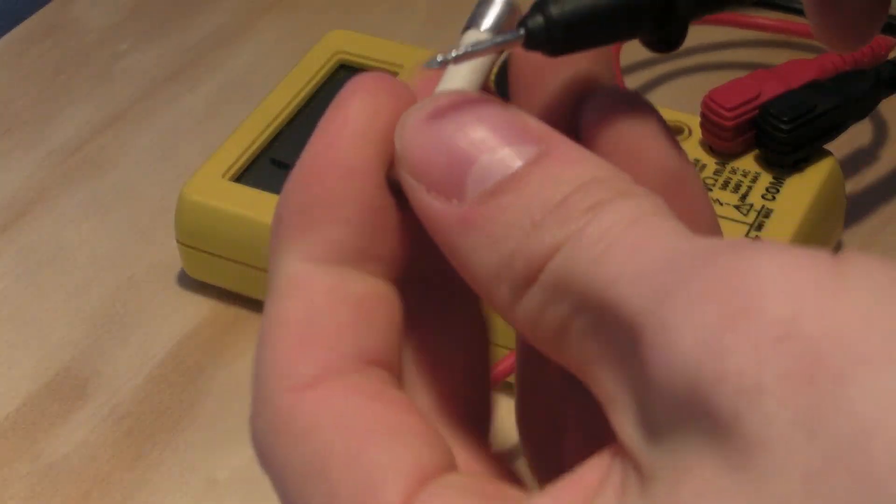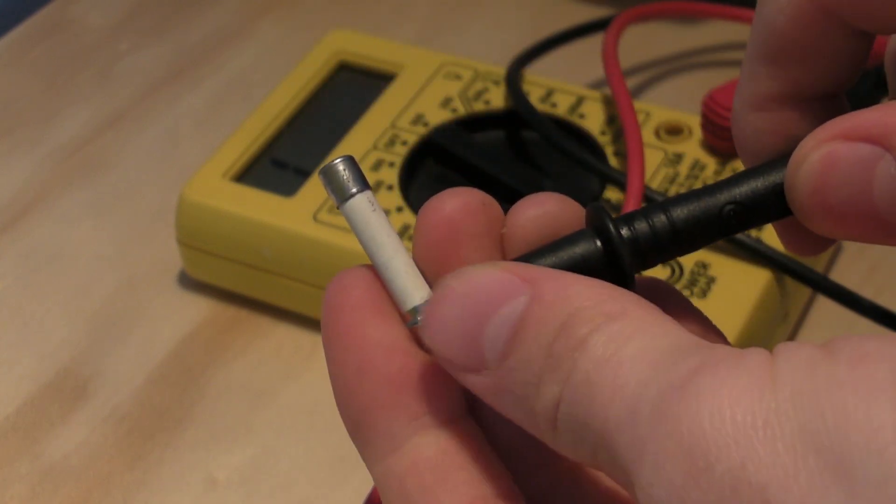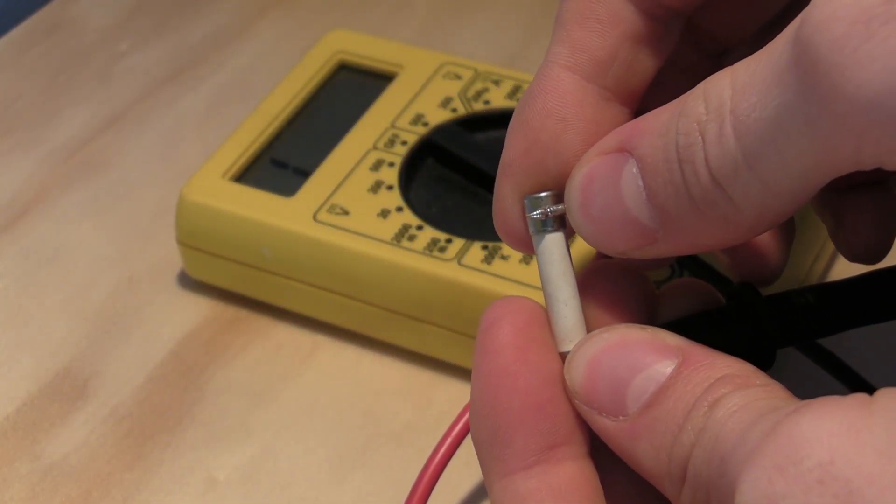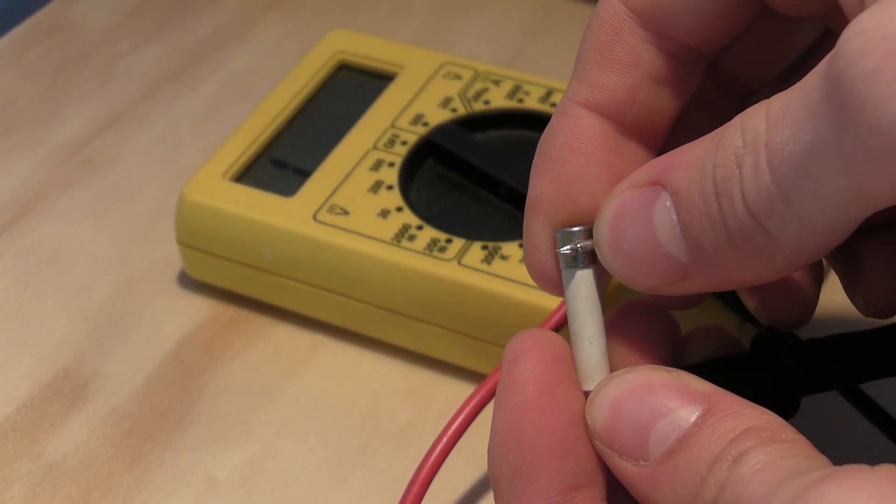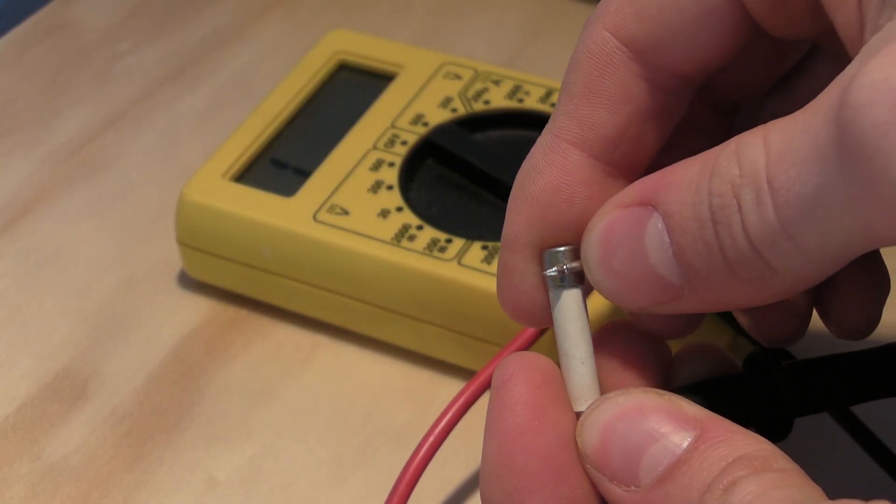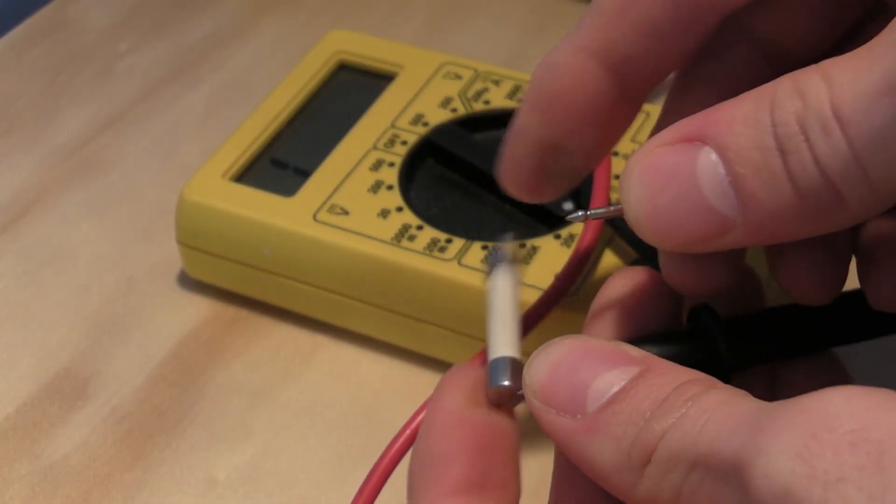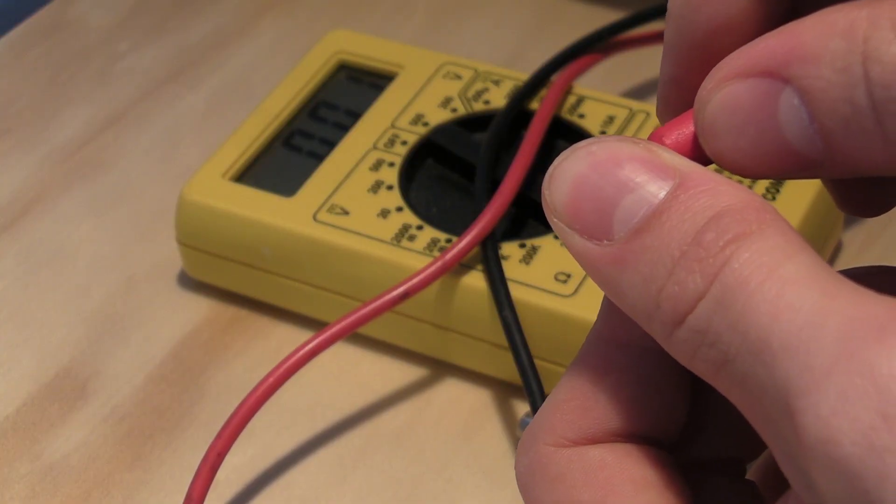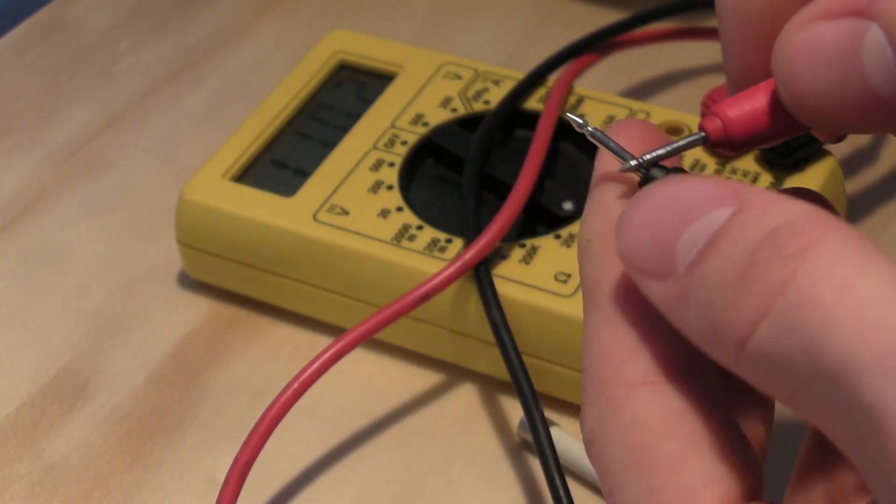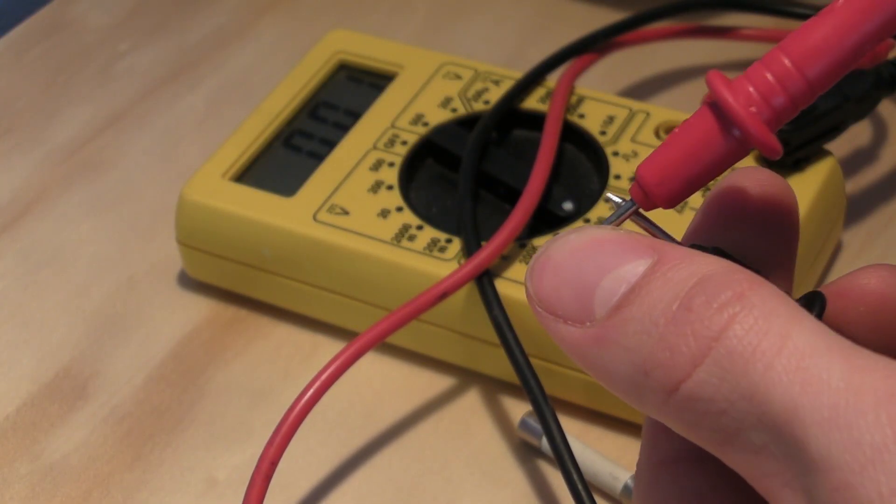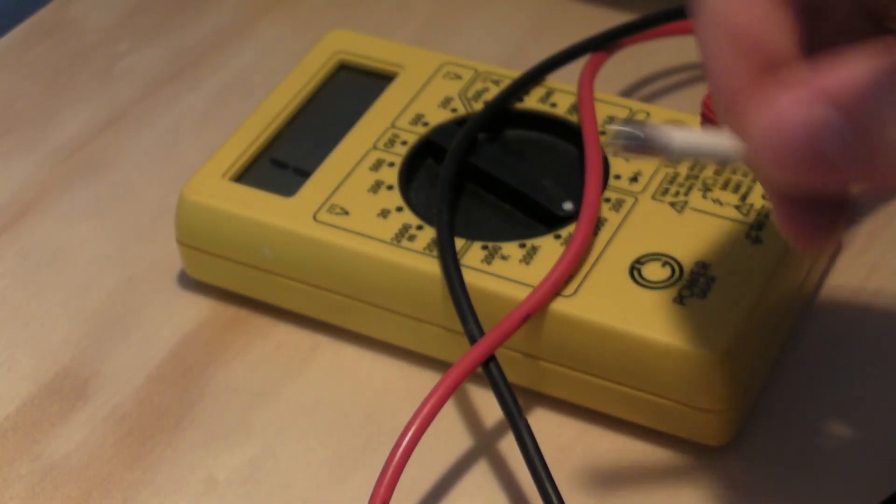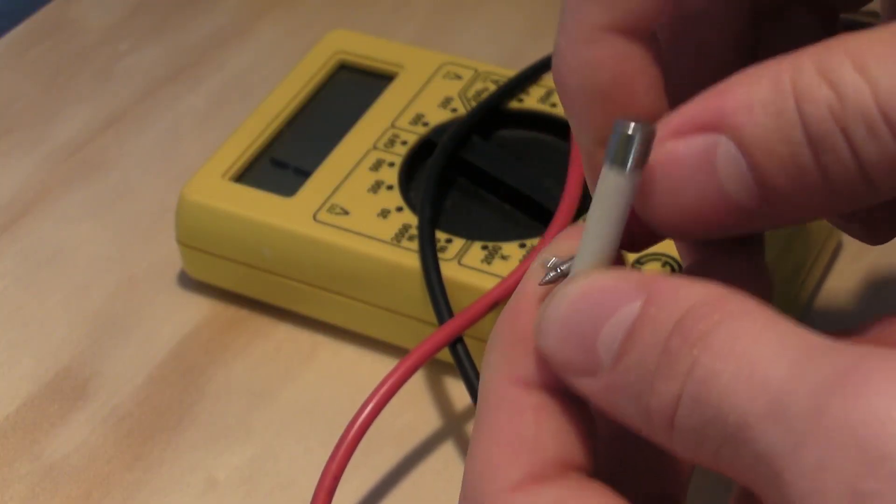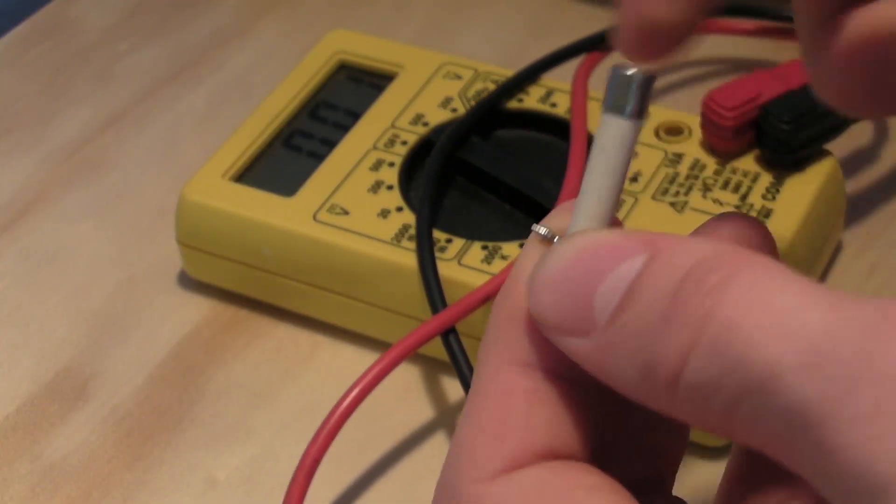You're going to take your fuse, touch one side to the black probe, other side to the red, and if you look on the screen there, it's staying at 1, so that means that no current is able to flow through this fuse. If I touch two probes together, you'll see it jumps right down to .01, so basically zero. Current is free to flow between these two probes. If this fuse here was still good, the same thing would happen.